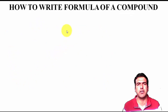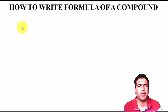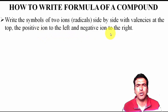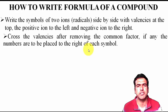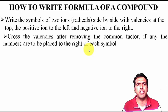Now I want to tell you how we can write the formula of a given compound. You can write a formula when you know the formula of cations and anions along with their charges. Step one: write the symbols of the two ions side by side with their valences at the top — positive ion on the left and negative ion on the right. Step two: cross the valences after removing any common factor; the numbers are placed to the right of each symbol — the cation's charge goes below the anion, and the anion's charge goes below the cation.